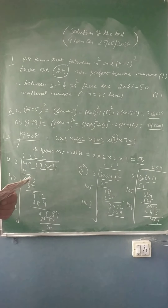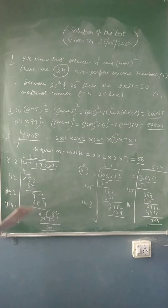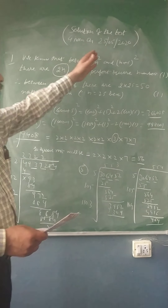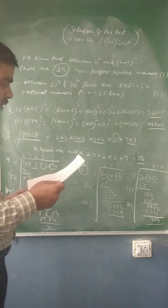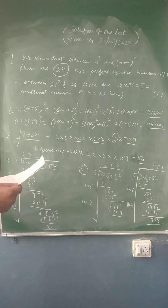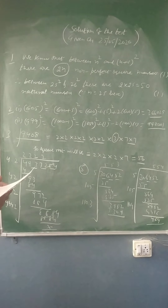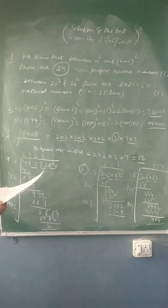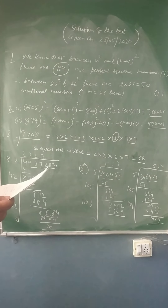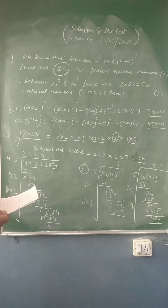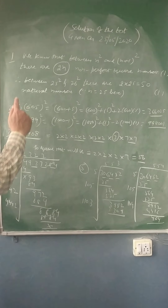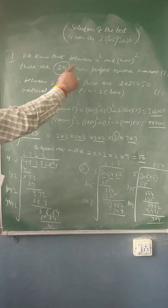Good morning to all. Here is the solution of your test which was given to you on the 25th of this month. The first question was: how many natural numbers lie between the squares of the following natural numbers, that is 25 and 26? This question was based upon the property that I have written here.